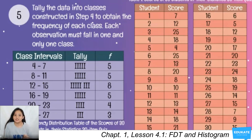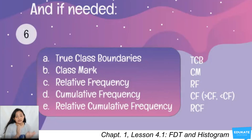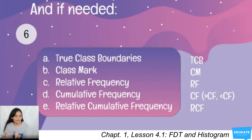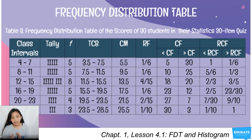This gives us the completed grouped frequency distribution table. However, there are additional columns we can add: true class boundaries (TCB), class mark (CM), relative frequency (RF), cumulative frequency (CF) — both greater-than and less-than — and relative cumulative frequency (RCF), also in greater-than and less-than forms.